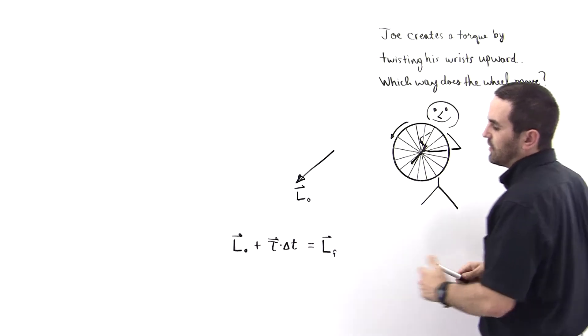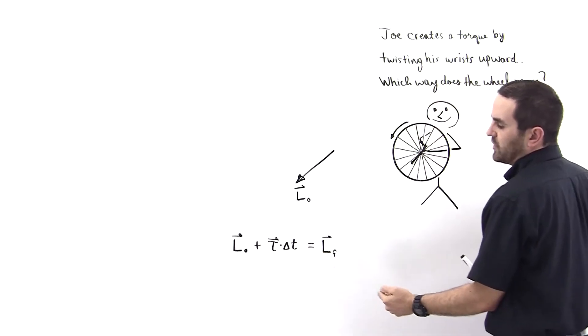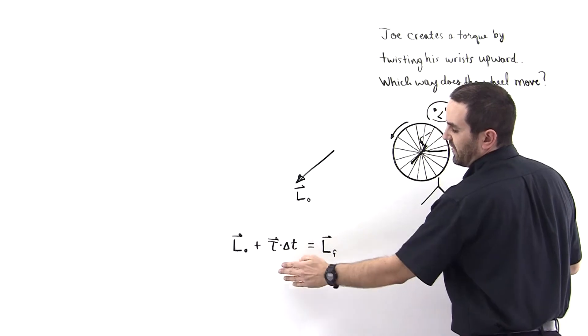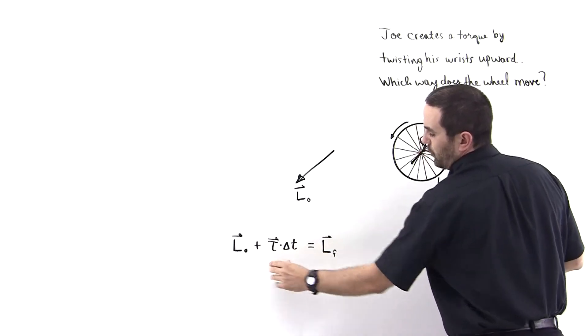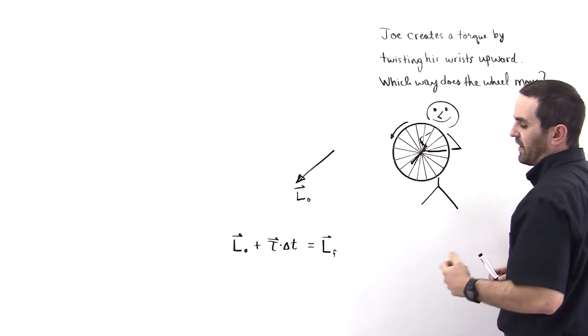Now we need to get the direction for this torque impulse term. Once we have this torque impulse term as a vector, then we can just add these two vectorially to get the direction of the final angular momentum.